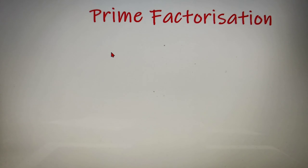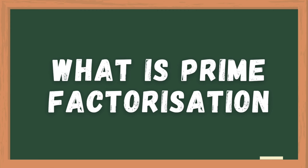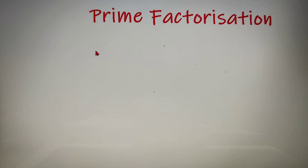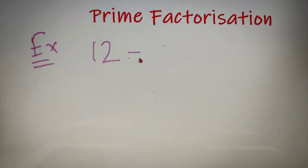Now before learning how, let us first understand what is prime factorization. Basically, prime factorization is a property possessed by each and every number by which it can be represented as a product of prime numbers raised to any arbitrary powers. For example, suppose we have the number 12. I can say that 12 is equal to 2 squared into 3.